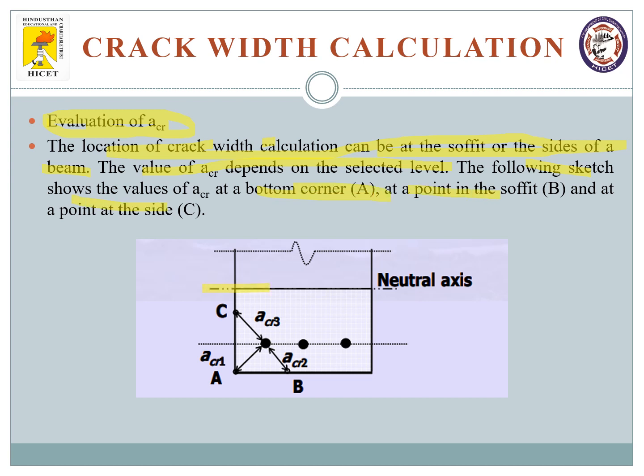If you take this as your neutral axis with longitudinal bars, you can have any type of surface. I can have taken A as a surface, B as a surface, or C as a surface. For point A, this will be my shortest distance, ACR1. If you take this point, this will be my ACR2. If you're talking about C, this will be my ACR3.